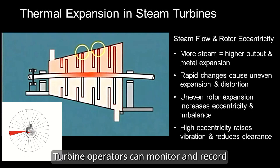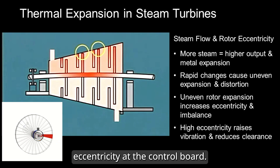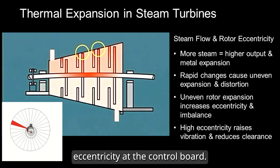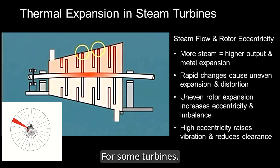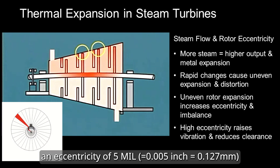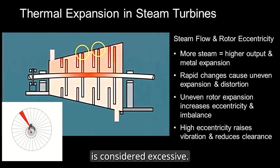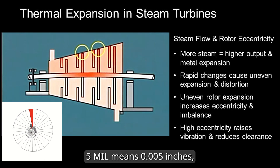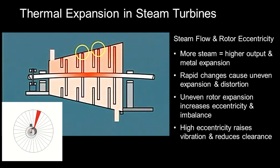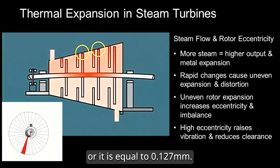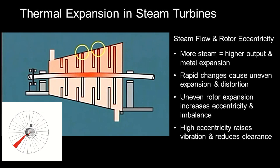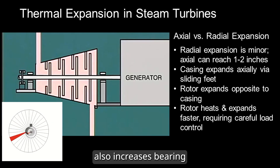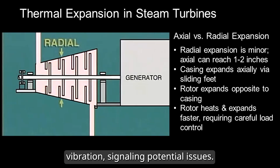Eccentricity is dangerous because it reduces radial clearance between rotating and stationary components. Turbine operators can monitor and record eccentricity at the control board. For some turbines, an eccentricity of 5 mils is considered excessive — 5 mils means five thousandths of an inch, or 0.127 mm. High eccentricity also increases bearing vibration, signaling potential issues.